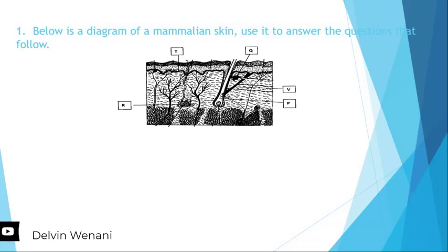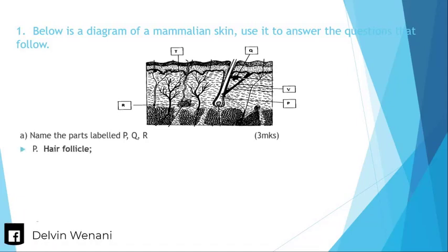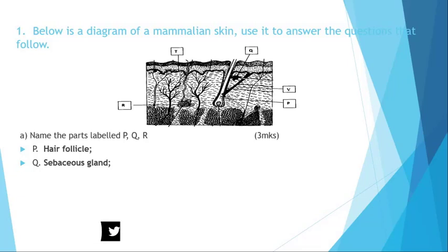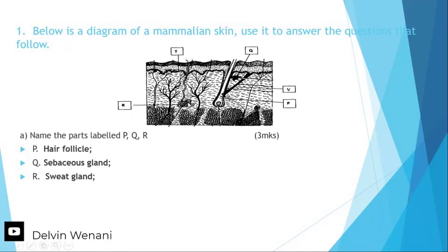Question number 1 asks us to name the parts labelled P, Q, and R. Part P is a hair follicle. Then part R is a sweat gland. So for more details we are going to be seeing some of the questions for function, etc. So let's move on.